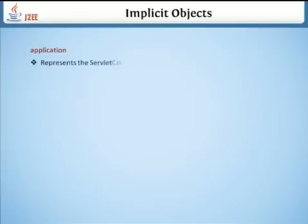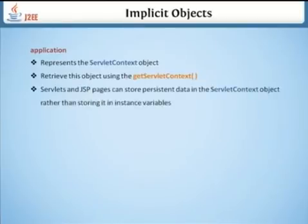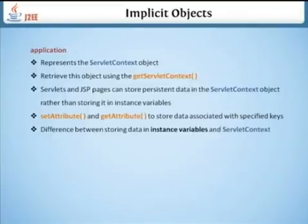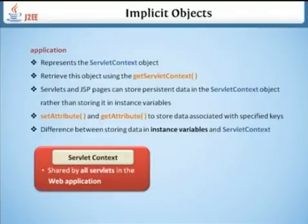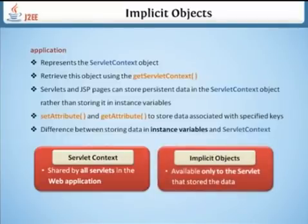Application represents the servlet context object, retrieved using getServletContext(). Servlets and JSP pages can store persistent data in the servlet context object rather than in instance variables. Use setAttribute and getAttribute to store data with the specified keys. The servlet context is shared by all servlets in the web application, unlike instance variables which are available only to the servlet that stores the data.